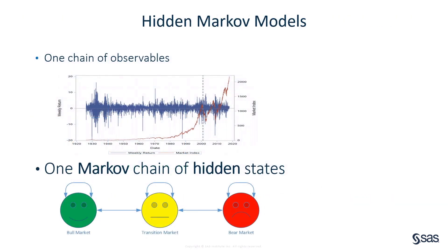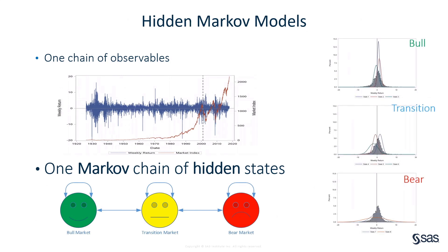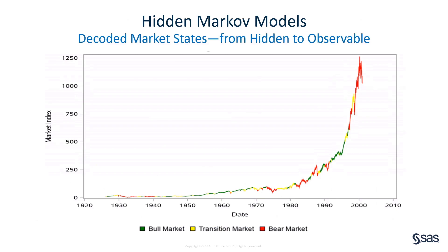HMM stands for Hidden Markov Model. It's one of the most popular machine learning tools for time series analysis, and it has been used in economics, finance, science, and engineering for 60 years. A hidden Markov model contains two chains. One chain is what you can observe, like stock prices and returns. The other chain is what you cannot observe — the so-called hidden states, like market states: bull, bear, or in between. The hidden states form a Markov chain, linked to the chain of observables through some conditional distributions. After you estimate the HMM, the hidden states can be decoded so that it seems you can directly observe those hidden states. As you see in this graph, the market states become observable. You can also forecast those market states and then devise trading strategies based on those forecasts.